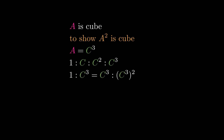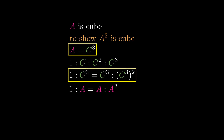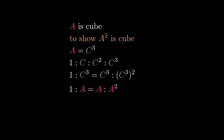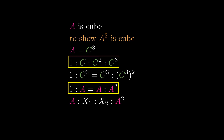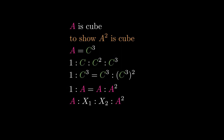1 to c cubed is proportional to c cubed to c cubed squared, which is the same as 1 to a being proportional to a to a squared. Since 1 and a have two mean proportions, a and a squared also have two mean proportions.